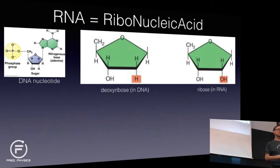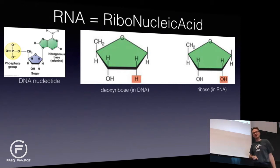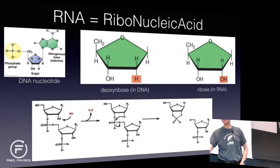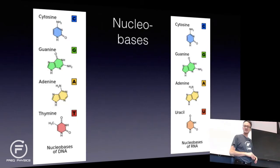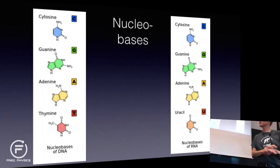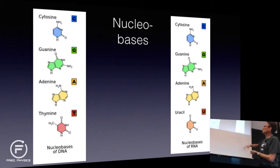While DNA forms a double helix with the classical structure, RNA typically prefers to be a single strand. The bases in RNA are A, G, C — and uracil instead of thymine.